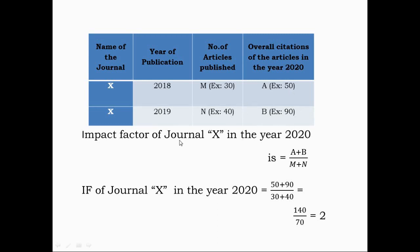For our example, the impact factor of journal X is 50 plus 90 divided by 30 plus 40, which equals 2. So the impact factor of journal X is 2.